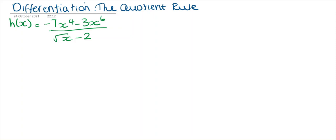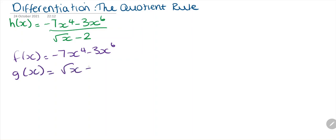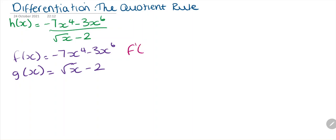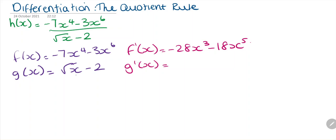Differentiation using the quotient rule. We're given the function h(x), so first we split up and define our functions. f(x) is going to be the numerator, and g(x) is the denominator, so we have √x minus 2. Now we write their derivatives: f'(x) is going to be -28x³ minus 18x⁵. For g(x), we rewrite √x as x to the half, so g'(x) is ½x to the minus half, and the minus 2 disappears.